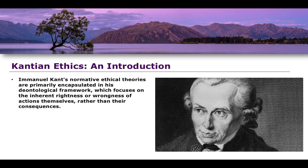Immanuel Kant's normative ethical theories are primarily encapsulated in a framework known as deontological. Deontology is less of a specific normative ethical theory and more of a category of theories — just as consequentialism is a broad category of normative ethical theory, with things like act and rule utilitarianism as subsets. Similarly, Kantian ethics sits within the broader concept of deontological frameworks. There is a focus on the inherent rightness or wrongness of actions themselves, rather than their consequences.